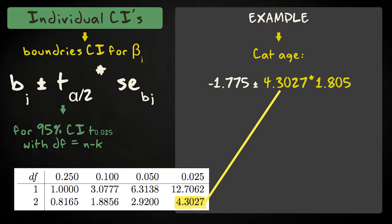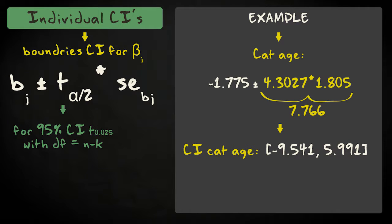To obtain the 95% confidence interval for the predictor cat age, we take the regression coefficient, minus 1.775, and subtract and add the margin of error, which is the t, which equals 4.3027 for this sample size and two degrees of freedom, and we multiply it with the standard error 1.805. So the margin of error equals 7.766. This results in an interval that ranges from minus 9.541 to 5.991.